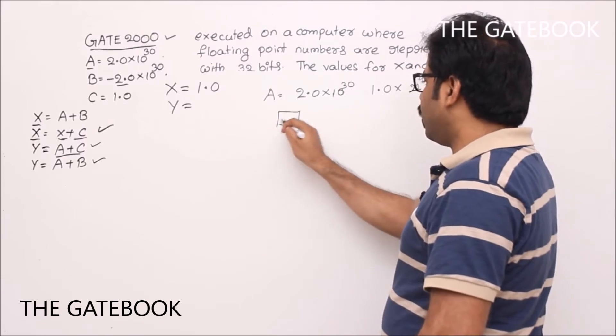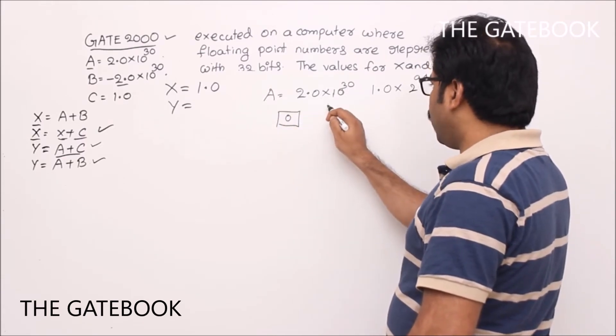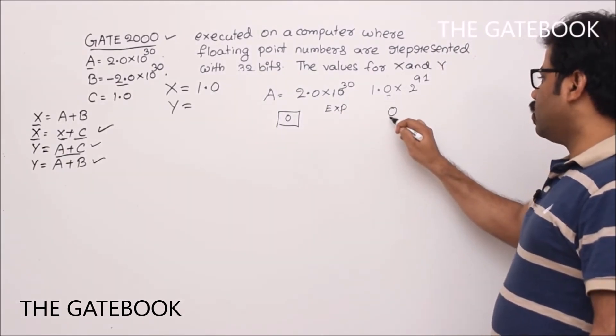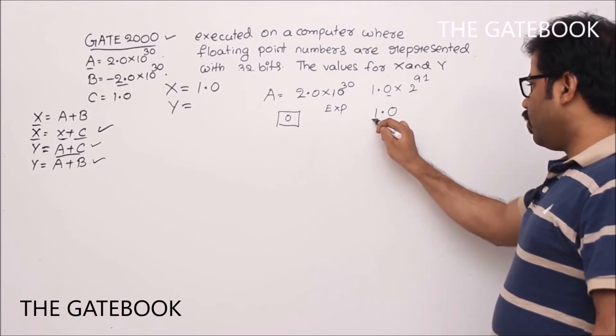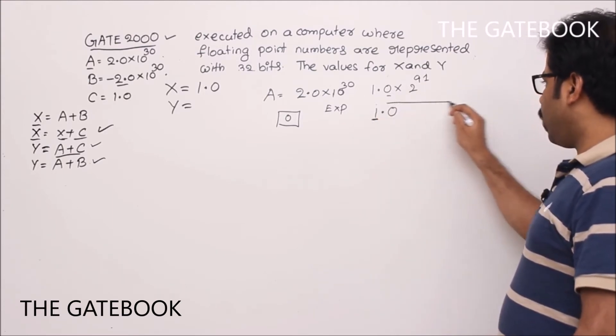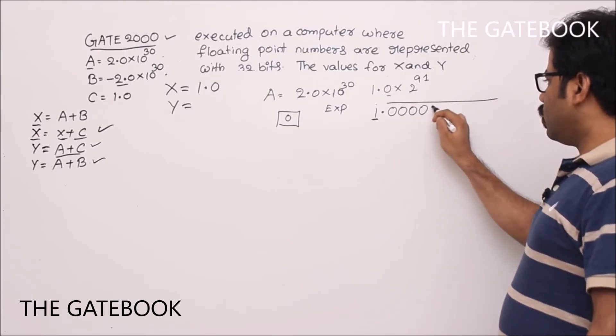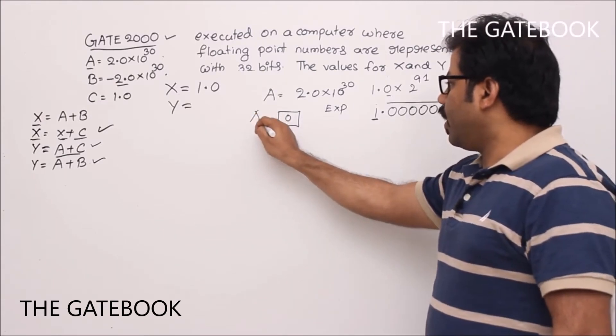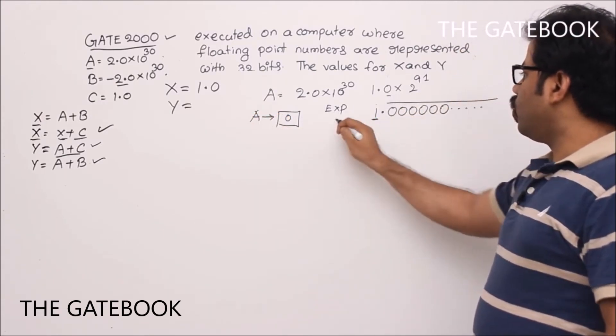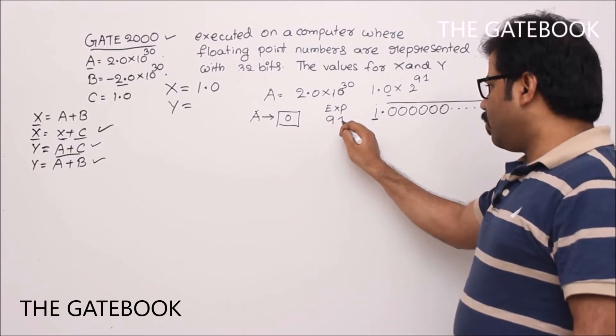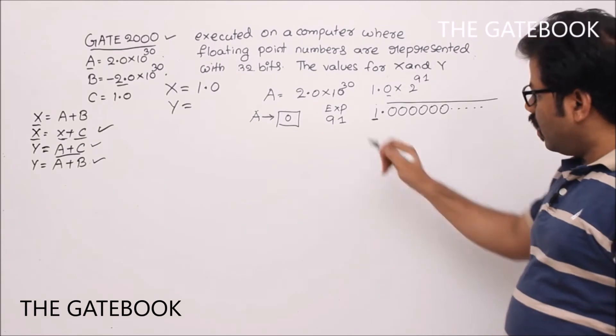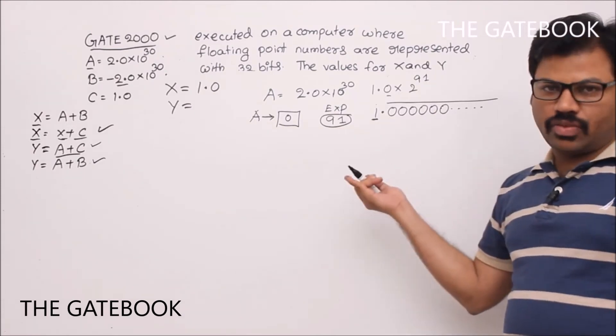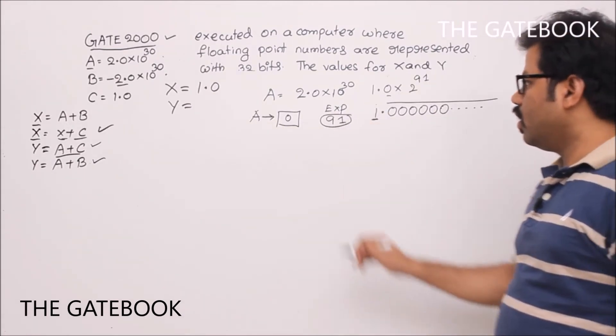So, A, I write from now onwards, this 2.0 into 10 power 30 as 1.0 into 2 power 91. So, how to represent that sign bit 0? So, there is an exponent portion here, right? There is a mantissa portion. So, in the mantissa, now we have to write all zeros. Let me write complete thing. So, this is implicit. But, still I am showing you. This is actually represented thing, right? 1.000000. How many? 23 zeros. Now, this is about A. A's representation. Exponent value, 2 to the power of 91. I am ignoring that bias thing because for everything we are doing that XS127, right? Let me represent in pure form, okay?